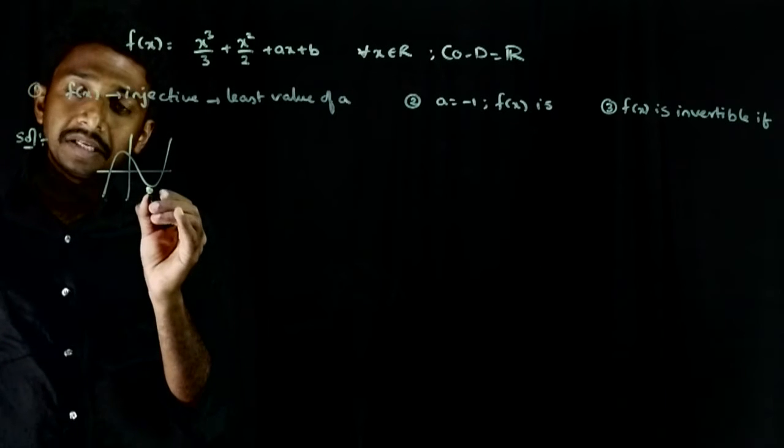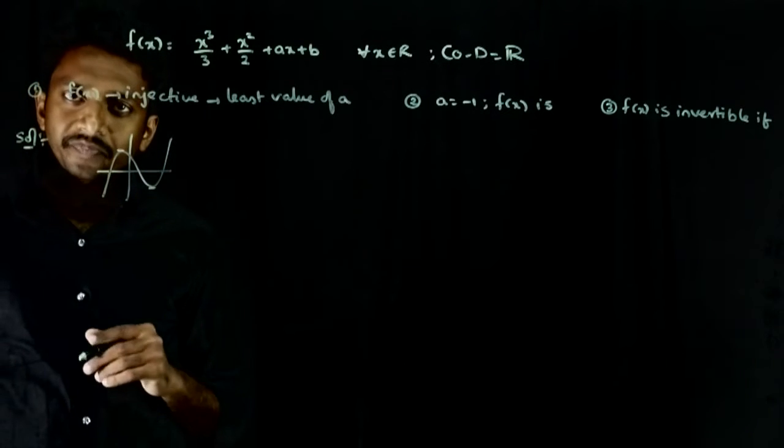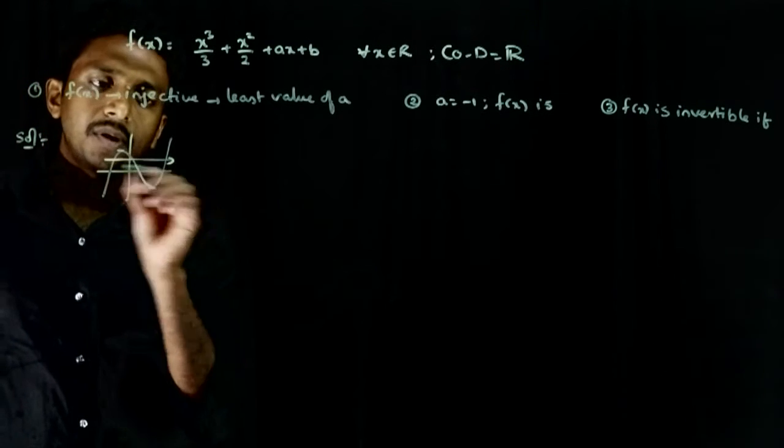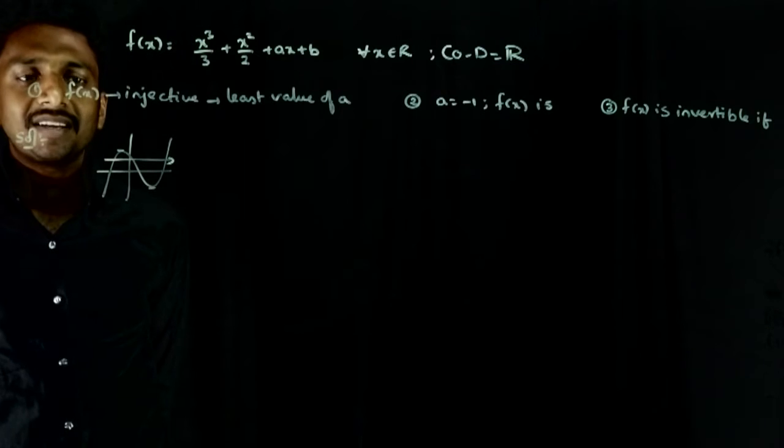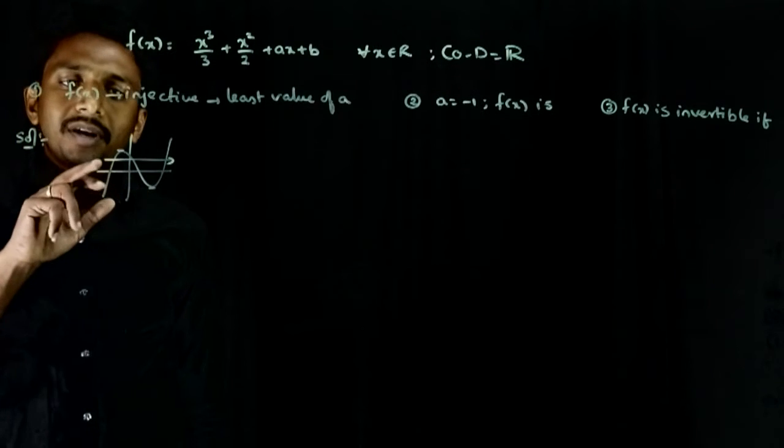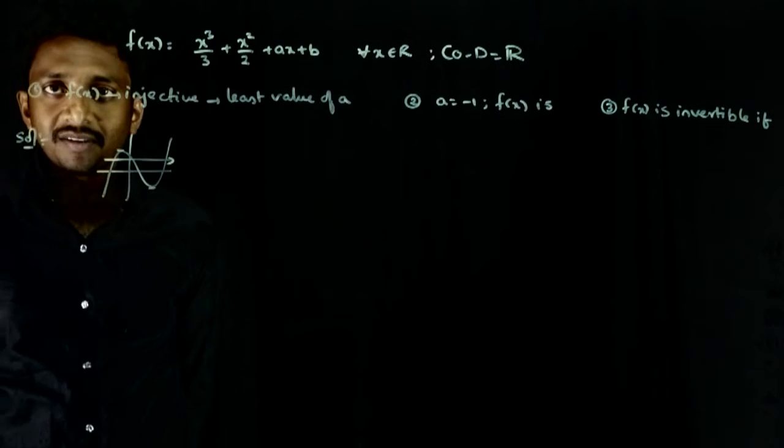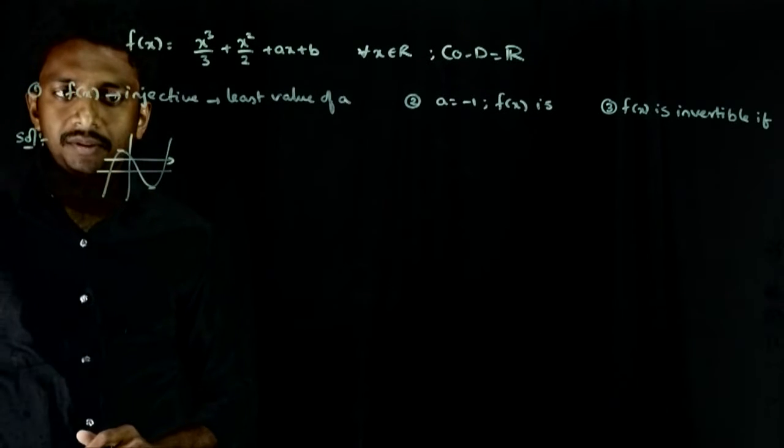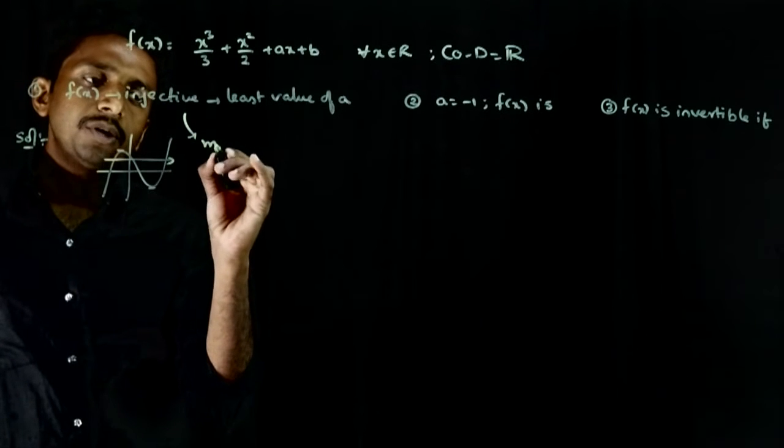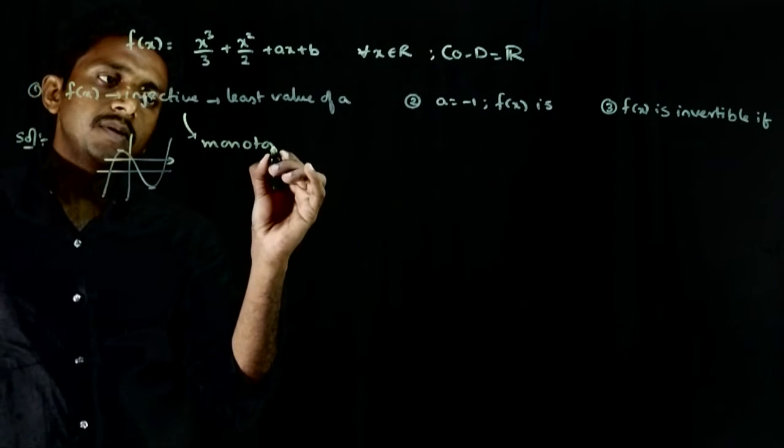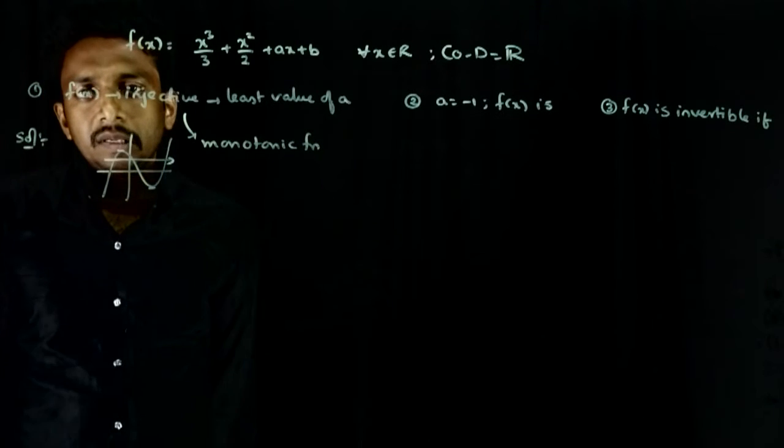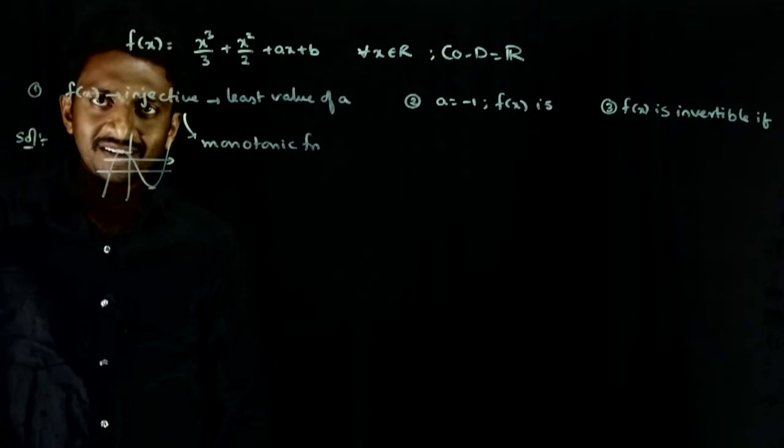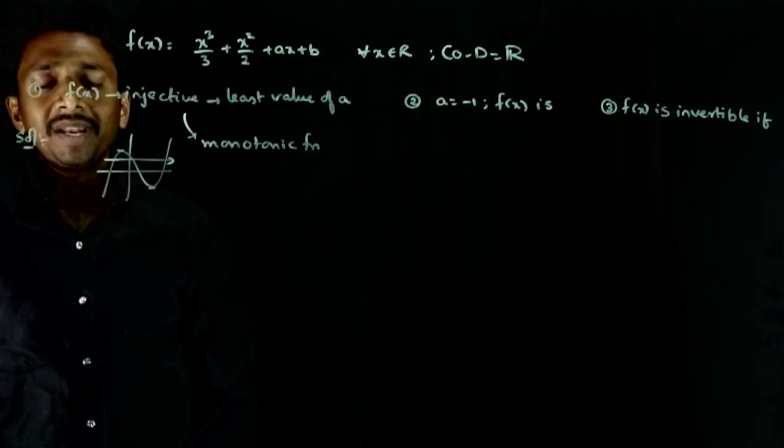A cubic function's graph usually looks like this. It will usually have a maximum and a minimum. But if a cubic function has maximum and minima, then it will not be one-one. Because the horizontal line test is not satisfied. One horizontal line can intersect the graph at three points. So, a cubic function to be one-one has to be a monotonic function.